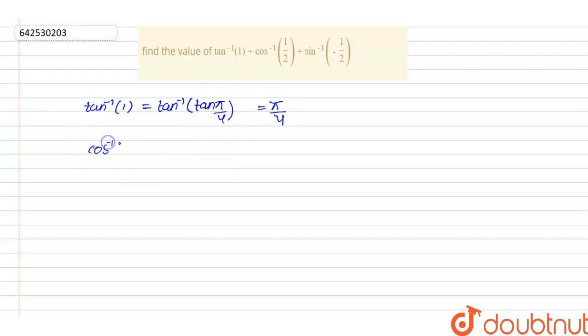cos inverse 1 by 2 is given. We can say that cos inverse 1 by 2 equals cos inverse cos pi by 3. We can write this, and this will be equals to pi by 3.